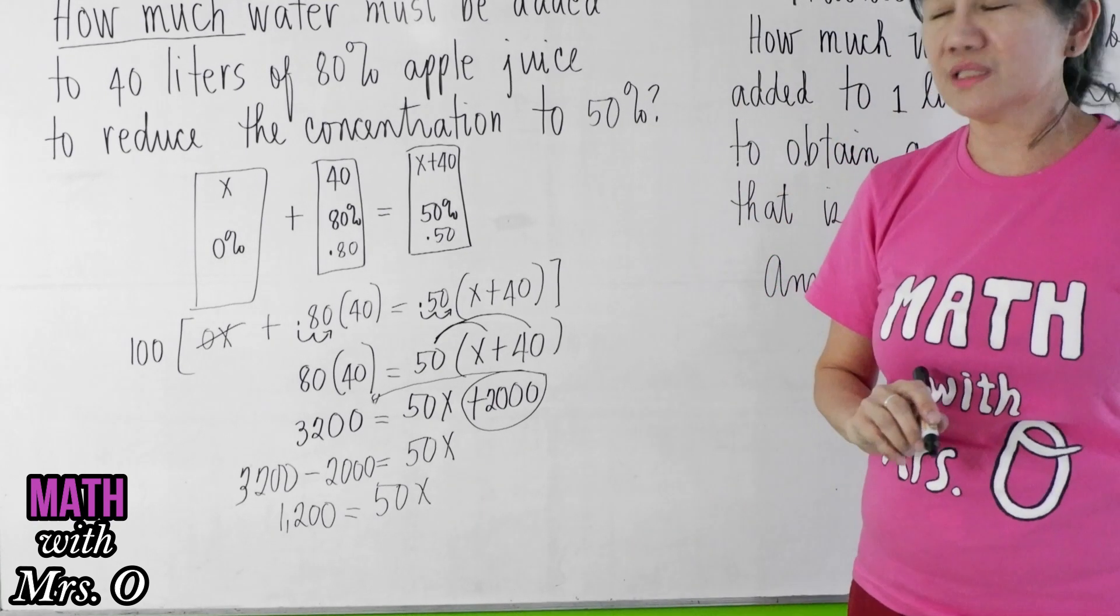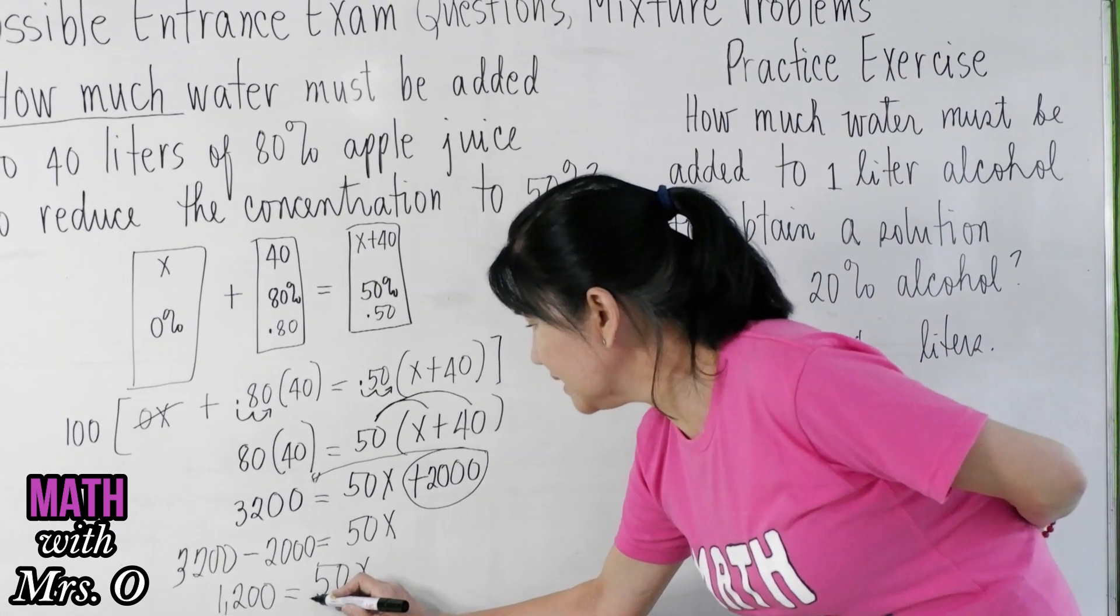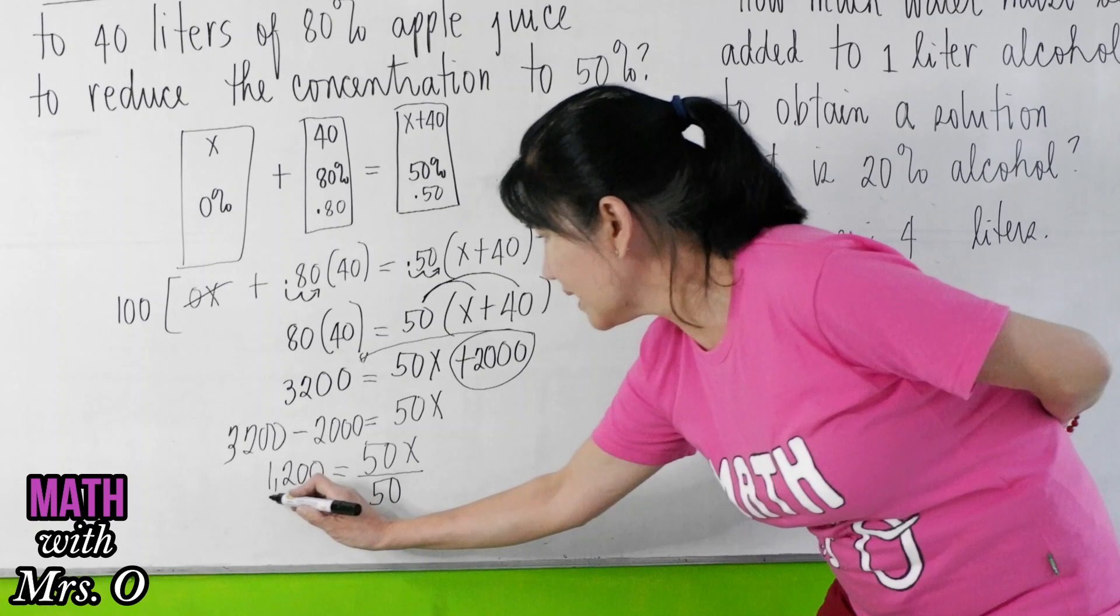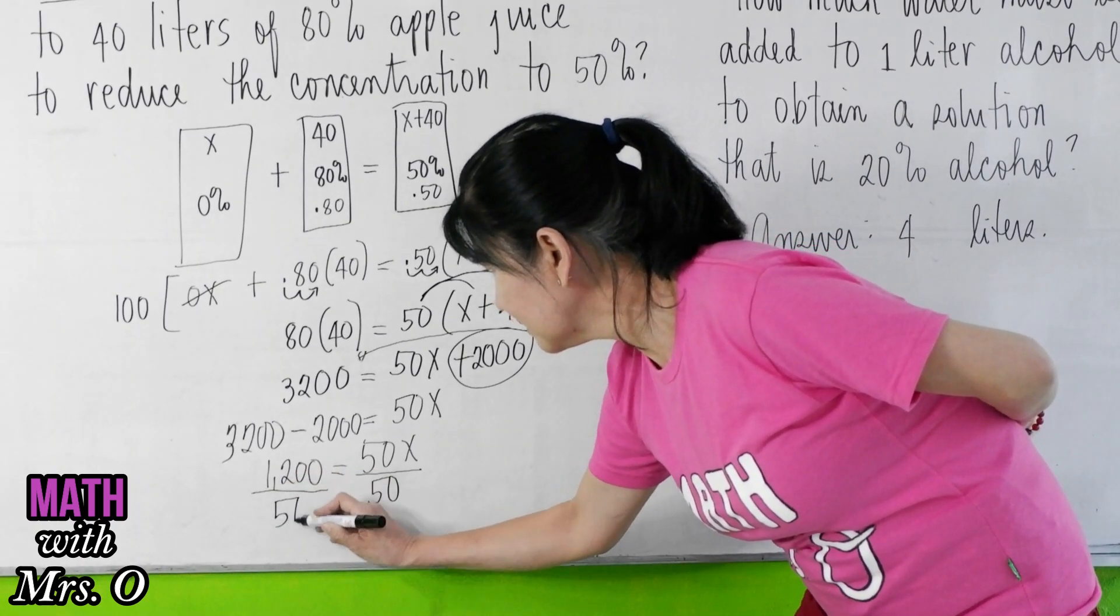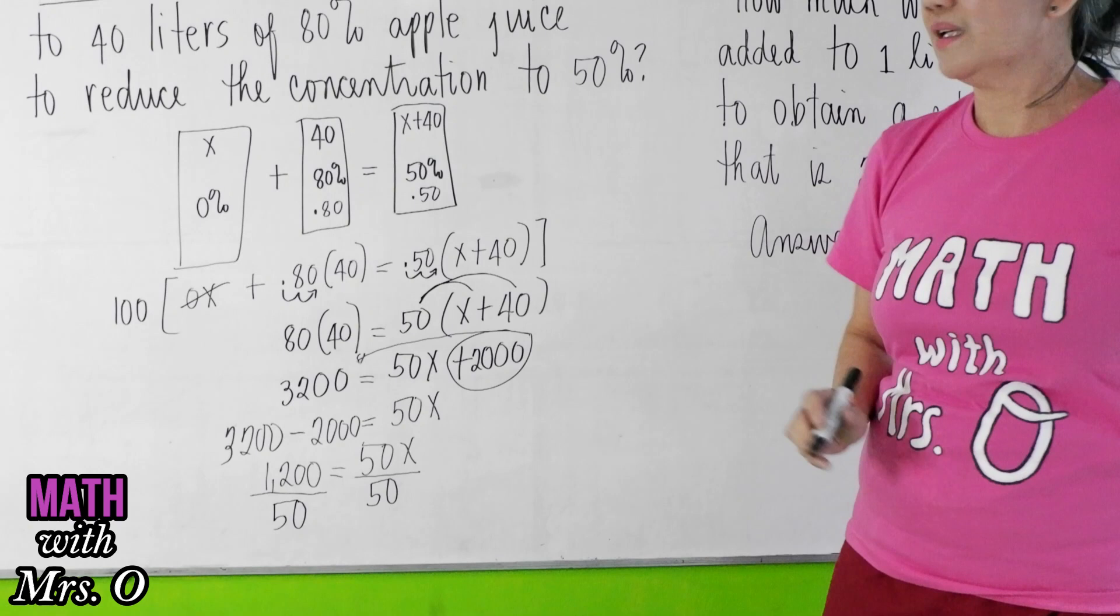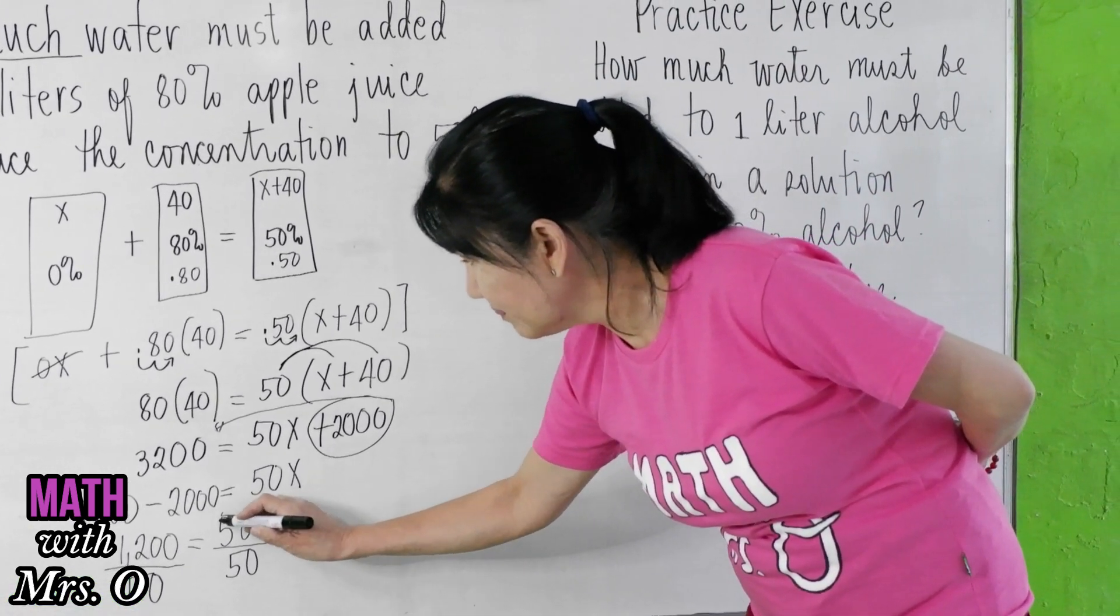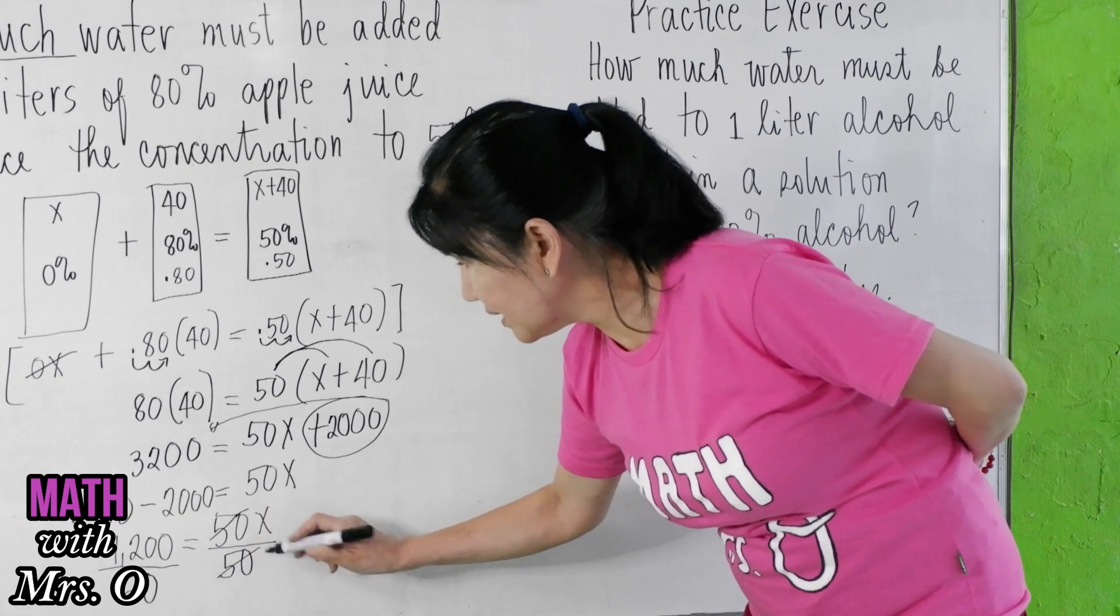To isolate x, we divide both sides by 50. 50 there, so 50 to the left and 50 to the right. So what do you see now?